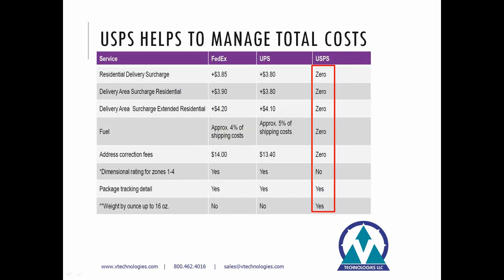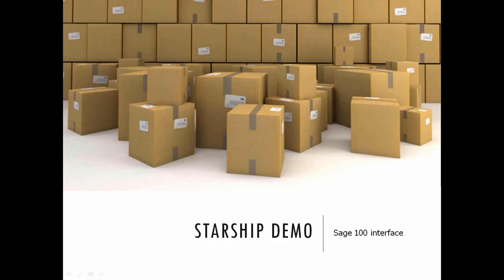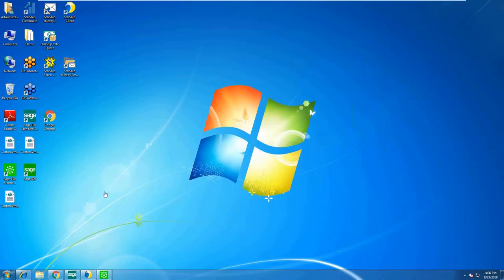With USPS you don't have to deal with any surcharges — no delivery or fuel surcharges, zero address correction fees, and you don't have to worry about dimensional rating. A lot of clients say USPS doesn't do package tracking, but they do now, and our module includes that. Any questions regarding the USPS module, feel free to reach out to me or your account rep. With that, let's jump into the integration between Sage and our e-commerce site Shopify.